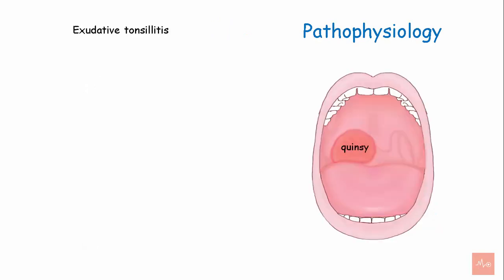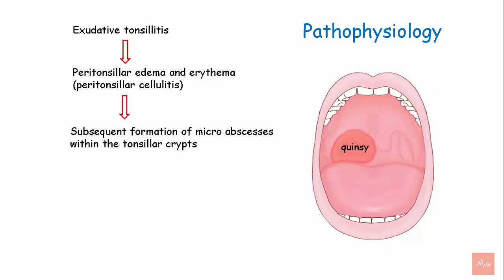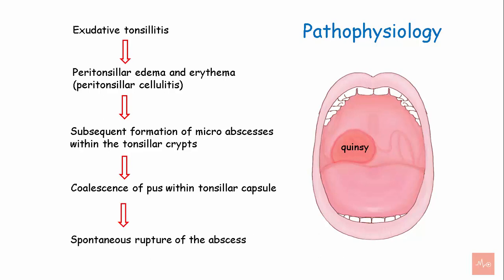Pathophysiology. It starts with exudative tonsillitis that results in peritonsillar edema and erythema, also known as peritonsillar cellulitis. Later, subsequent formation of micro abscesses within the tonsillar crypts are seen. This leads to coalescence of pus within the tonsillar capsule, and then spontaneous rupture of the abscess — which is Quincy.